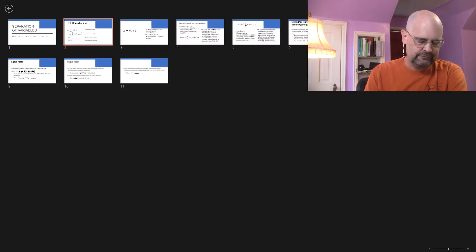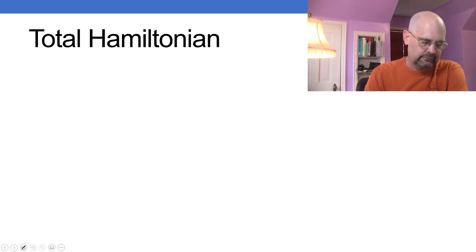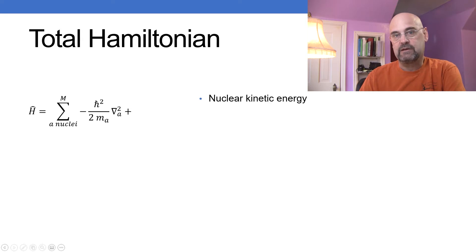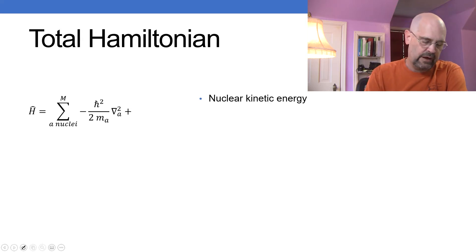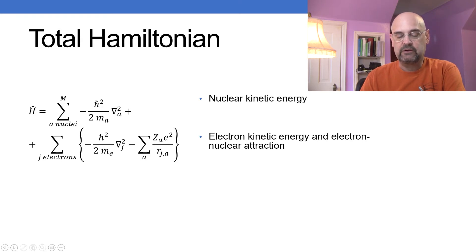My total Hamiltonian is going to be equal to several terms. First, I've got M nuclei, and so we're going to take minus h-bar squared over two times the mass of each nucleus times a del-squared for the nuclei. That's the nuclear kinetic energy. For all of the electrons, summing over all the electrons, we're going to have a couple of terms: the electron kinetic energy and the electron-nuclear attraction.